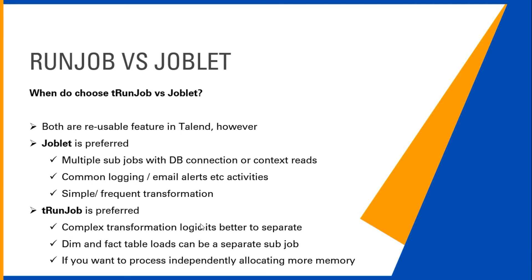tRun Job is also preferred when you want to process something independently. For example, out of 100 table loads, if only five tables are very large and need more memory while the others do not, you can use tRun Job to allocate more memory to the sub jobs that need it and leave the rest as is, then execute your master job. These are the major differences and when each component is preferred.